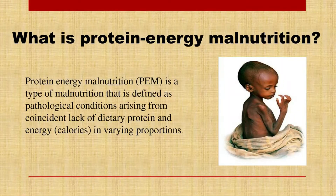The protein content in the diet is probably not an important determinant of the prevalence of obesity. The World Health Organization defines malnutrition as the cellular imbalance between the supply of nutrients and energy and the body's demand for them, to ensure growth, maintenance, and specific functions. The term protein energy malnutrition applies to a group of related disorders.